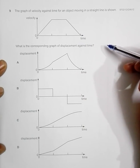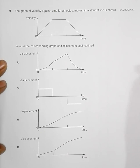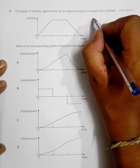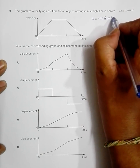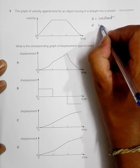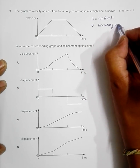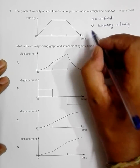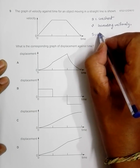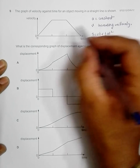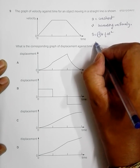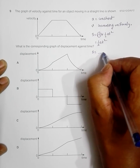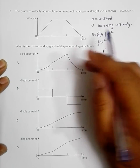The question asks for the corresponding graph of displacement against time from four given options. Since velocity is increasing uniformly, acceleration is constant. Following the equation s = ut + ½at², and since the initial velocity u is zero, the term ut becomes zero, giving us simply s = ½at². With a equal to a constant, this means s = constant × t², so the displacement-time graph will be parabolic.